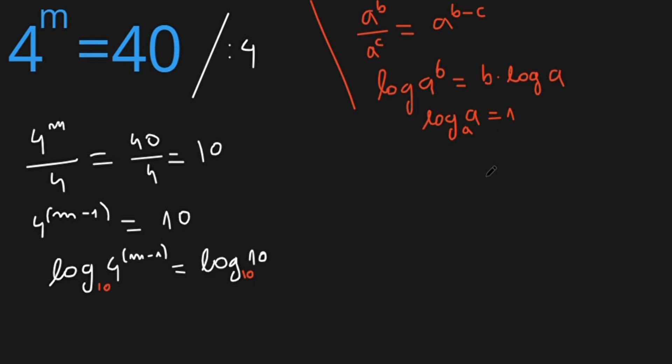So using those formulas, we have m minus 1 times log of 4 base 10 equals 1.